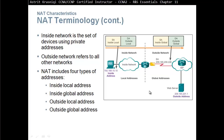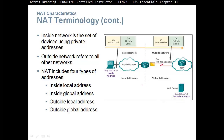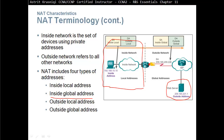Inside local address covers everything in our internal network. The address that we translate it to is the inside global address — for example, the address assigned to our router's outside interface. The server we are going to is the outside local address. The web server's router address is the outside global address, which is usually the same as the outside local address.